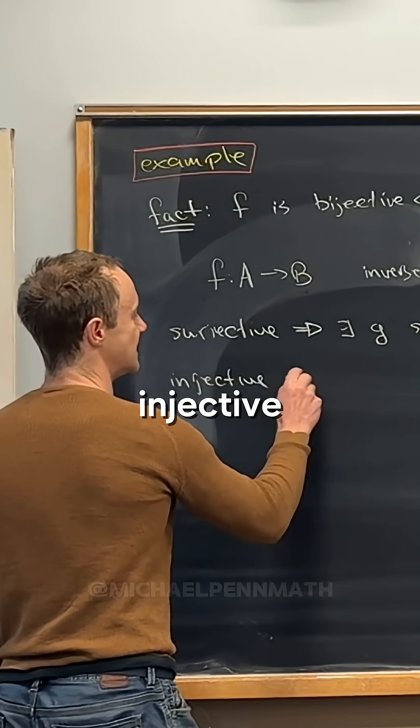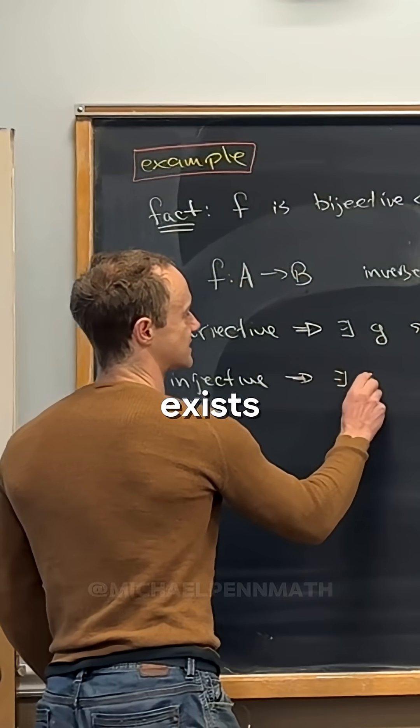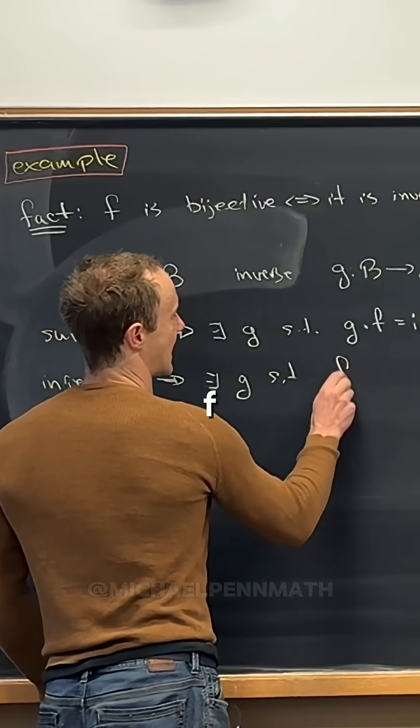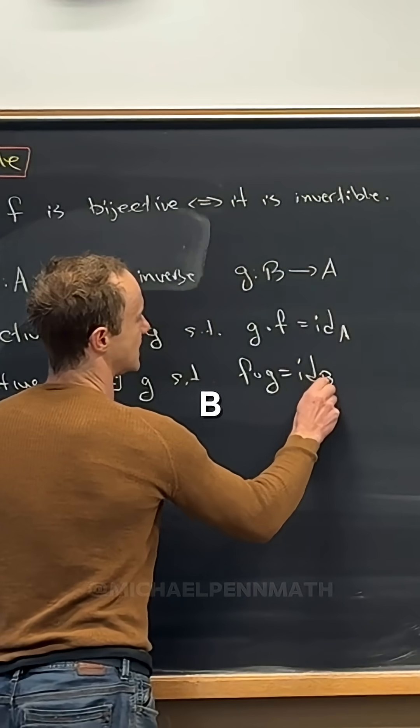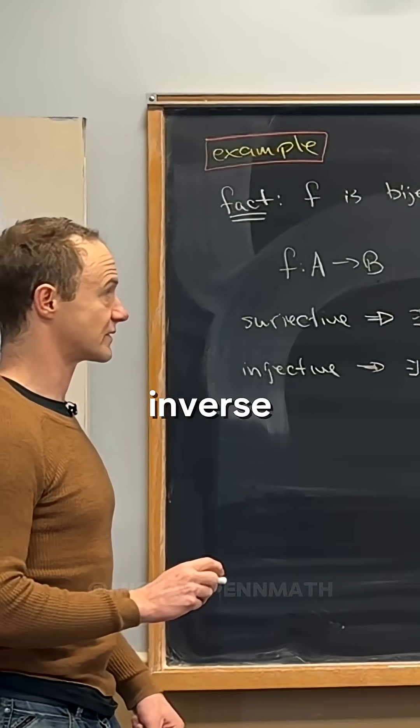But if it's injective, then that means there exists a g such that f composed with g is the identity on B. So it has a right inverse.